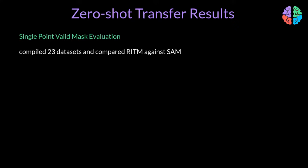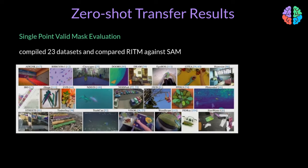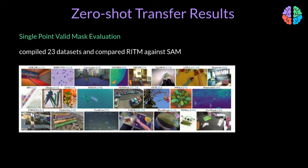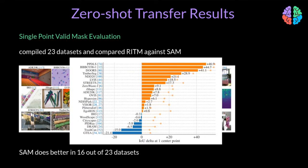To evaluate single-point mask segmentation, they collated 23 diverse segmentation datasets and compared the performance of a state-of-the-art algorithm called RITM against SAM. These are some sample images from each of the 23 datasets, and the reported results indicate that SAM performs better than RITM in 16 of the 23 datasets — which is quite impressive.